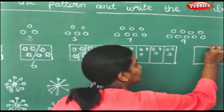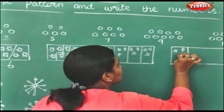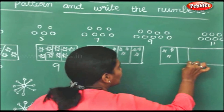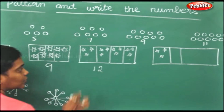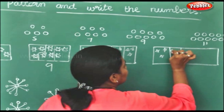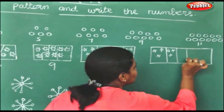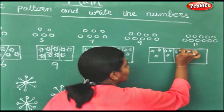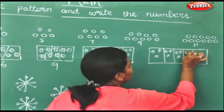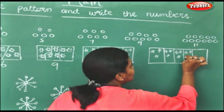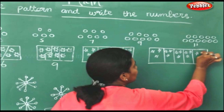Next will be 3. How many here? 1, 2, 3 blocks. Then 1, 2, 3, 4 blocks. Now we will do 5 blocks. So how much is 3 fives? 3 fives are 15. You will have to draw 5 blocks and 3 stars which makes 3 into 5 — it's nothing but 15.